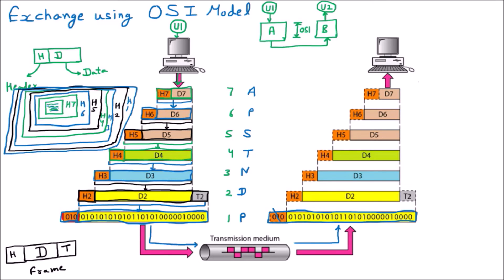Seven envelopes have been placed on the data. Now you are going to remove them one by one - each layer checks and removes its own envelope. H1 is removed, then the data is passed to the layer above. H2 and T2 are discarded by the data link layer. D2 goes up, H3 is discarded at the network layer, and H4 at the transport layer is also discarded - we are uncovering the different envelopes. H5 is then discarded.